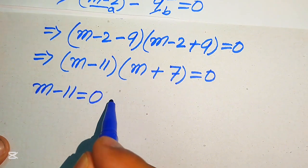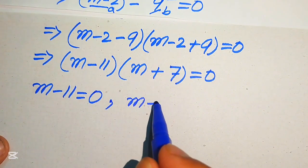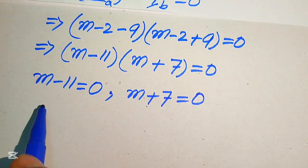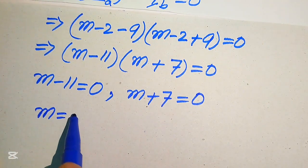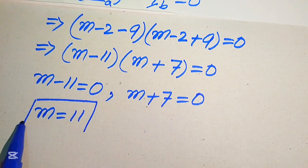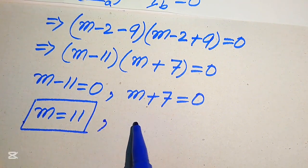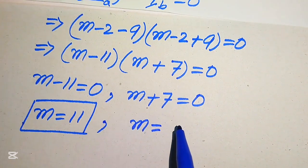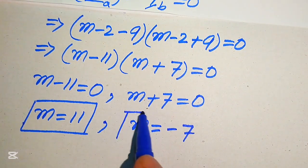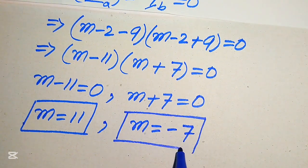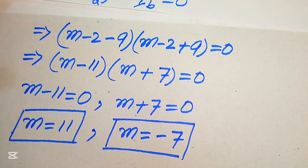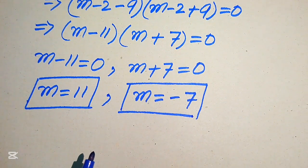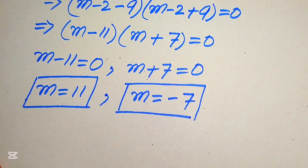Setting each factor to zero gives two cases: m minus 11 equals 0, so m equals 11; and m plus 7 equals 0, so m equals minus 7. Both methods confirm the same final answers: m equals 11 and m equals minus 7. Thank you so much for watching this video. Please subscribe to my channel for more exciting videos.